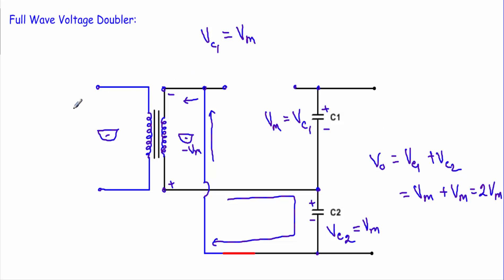So this is the voltage doubler circuit — we apply an input voltage with peak Vm and in the output we get 2Vm. That's why this is called a voltage doubler circuit. Thank you.